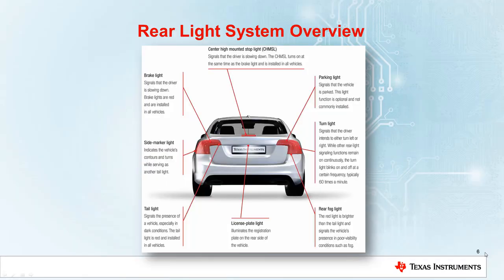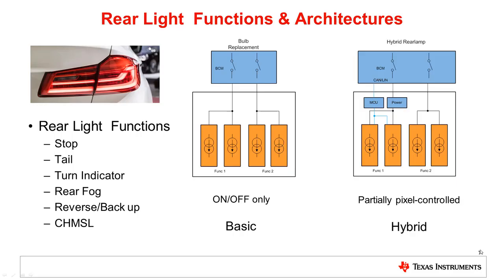The next section discusses the main system architectures of automotive rear lighting, including TI possible solutions. In a typical rear lamp, there are several light functions integrated, such as stop, tail, turn, fog, and reverse.